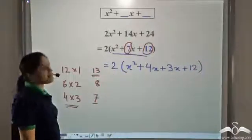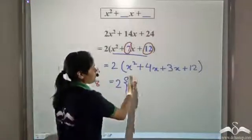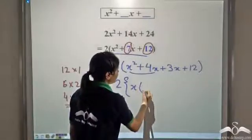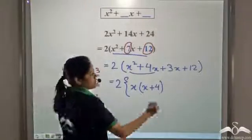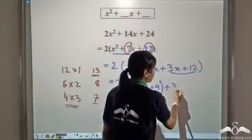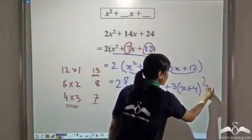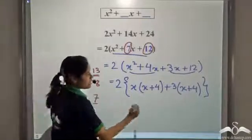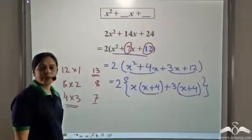So we can now write this expression as 2 into (x² + 4x + 3x + 12). Now we factorize by grouping. We take the first two terms — they have x in common — and write it as x(x + 4). In the next two terms, we have 3 common.